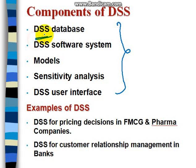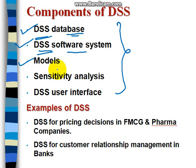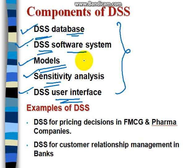The five components of the Decision Support System are: first, the DSS database; second, the DSS software system; third, the models; fourth, sensitivity analysis; and fifth, the DSS user interface. These are the five components of the DSS system. What are the examples of the DSS system?